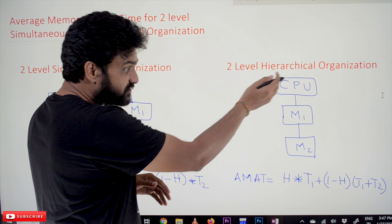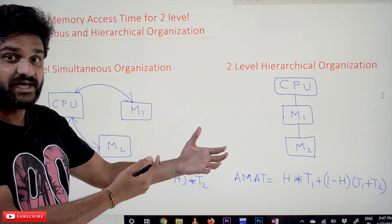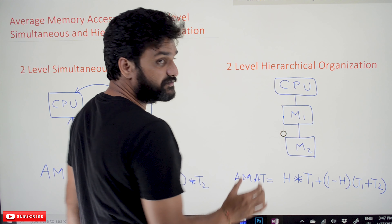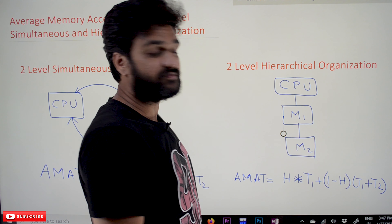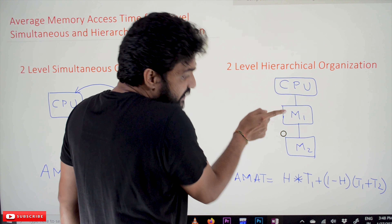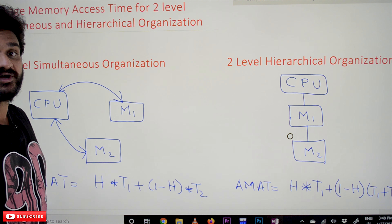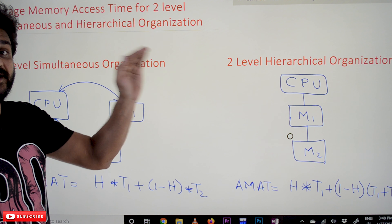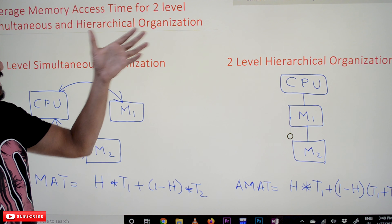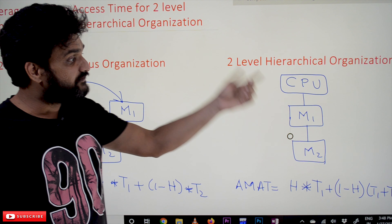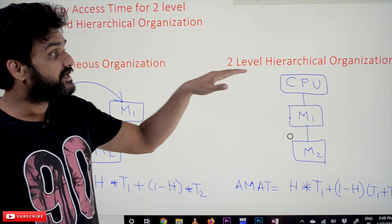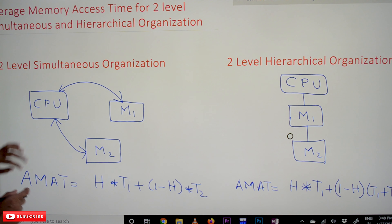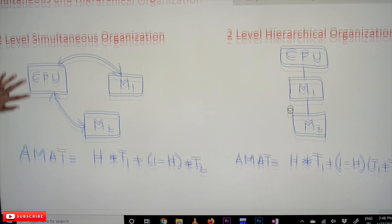Two-level hierarchical organization is the general organization we have seen in previous examples. The CPU first asks for the first-level memory — in our assumption, cache memory. If the data is not present there, then it goes to the second-level memory. When the CPU requests hierarchically across two levels, we call it two-level hierarchical organization.